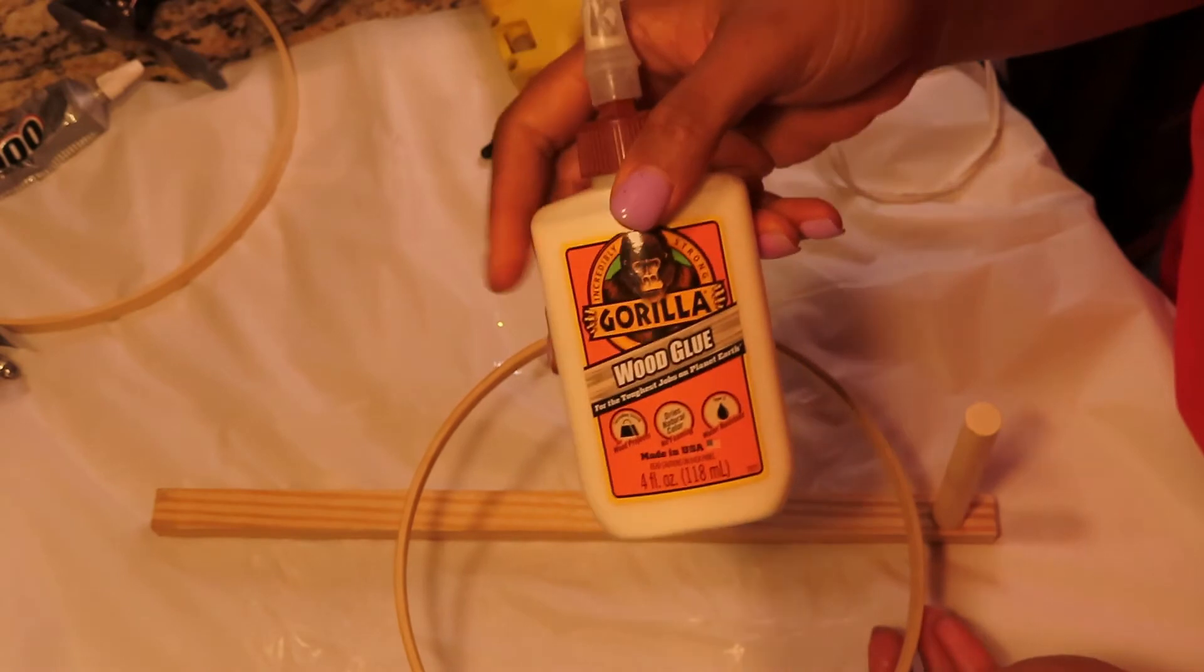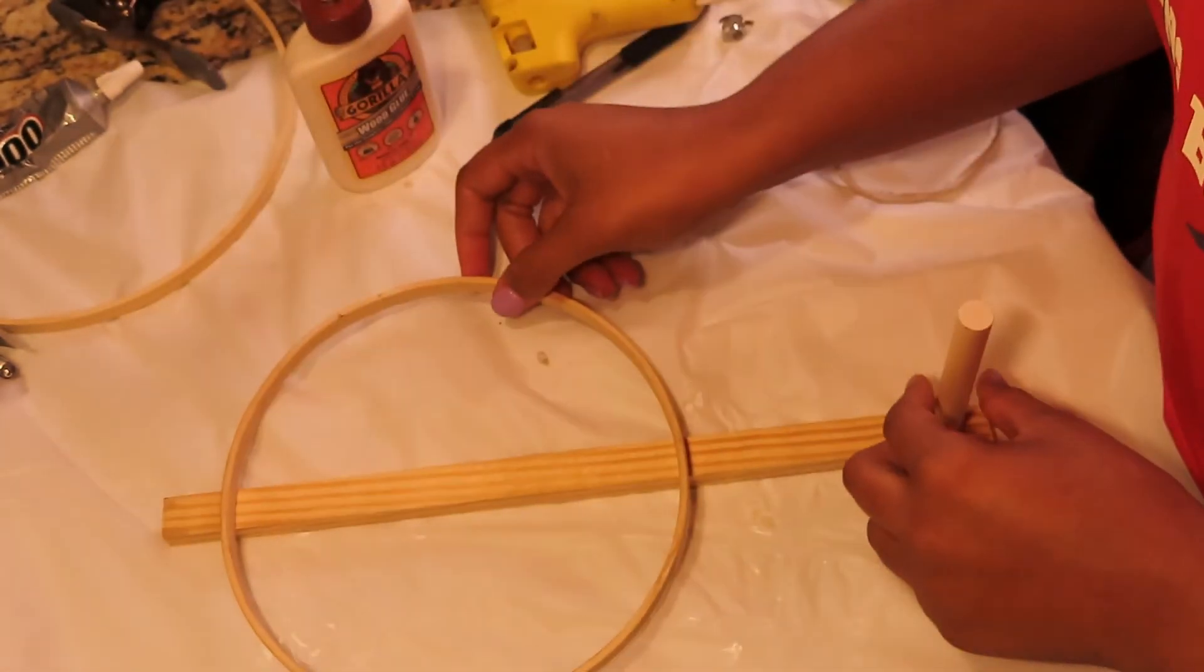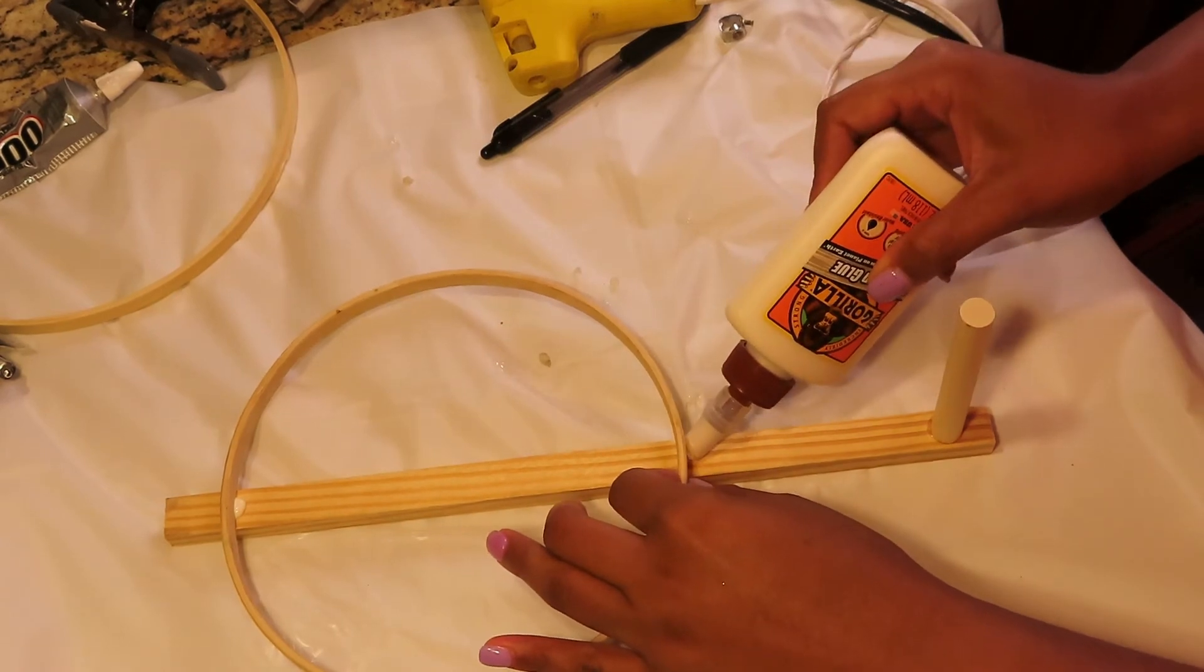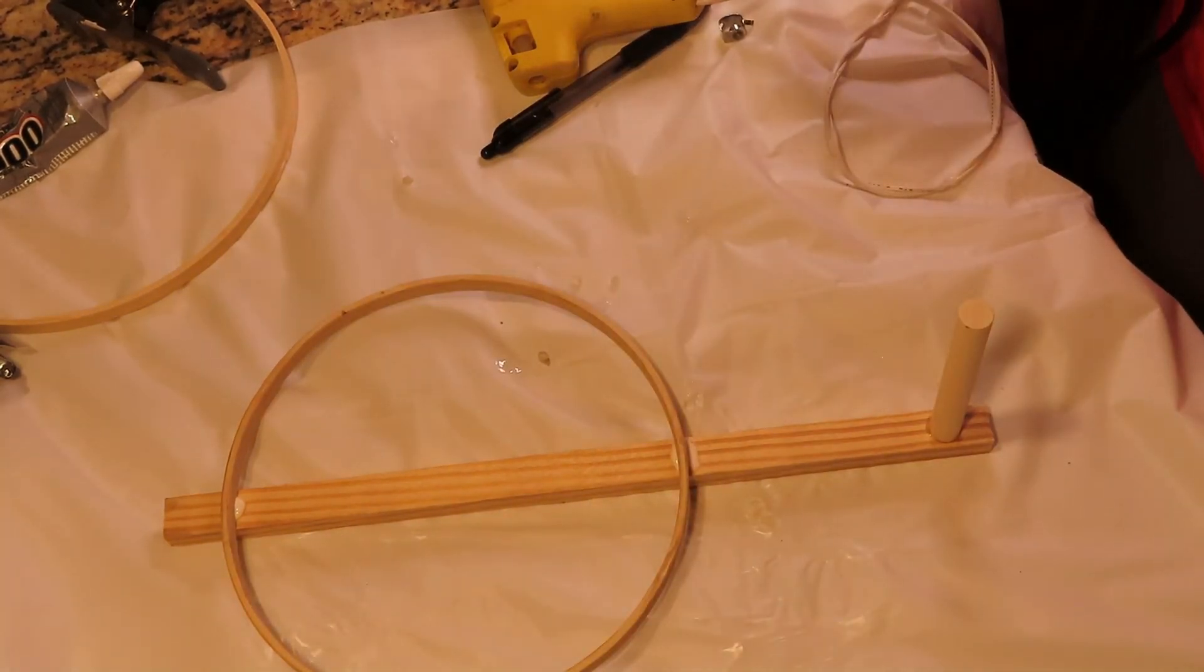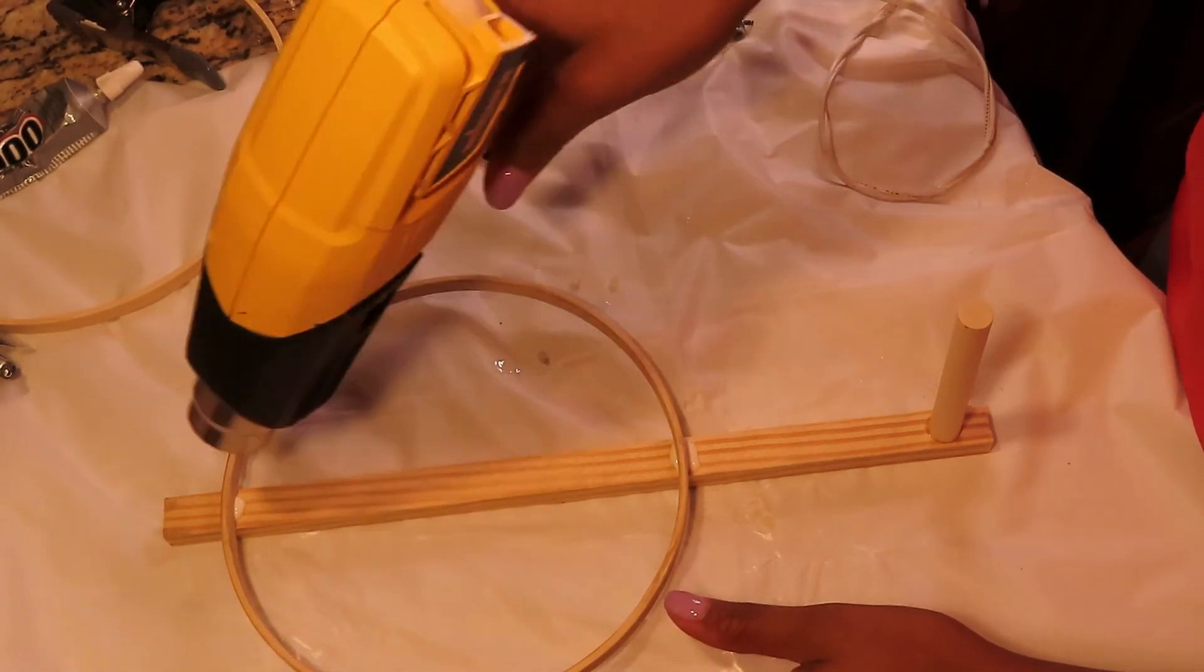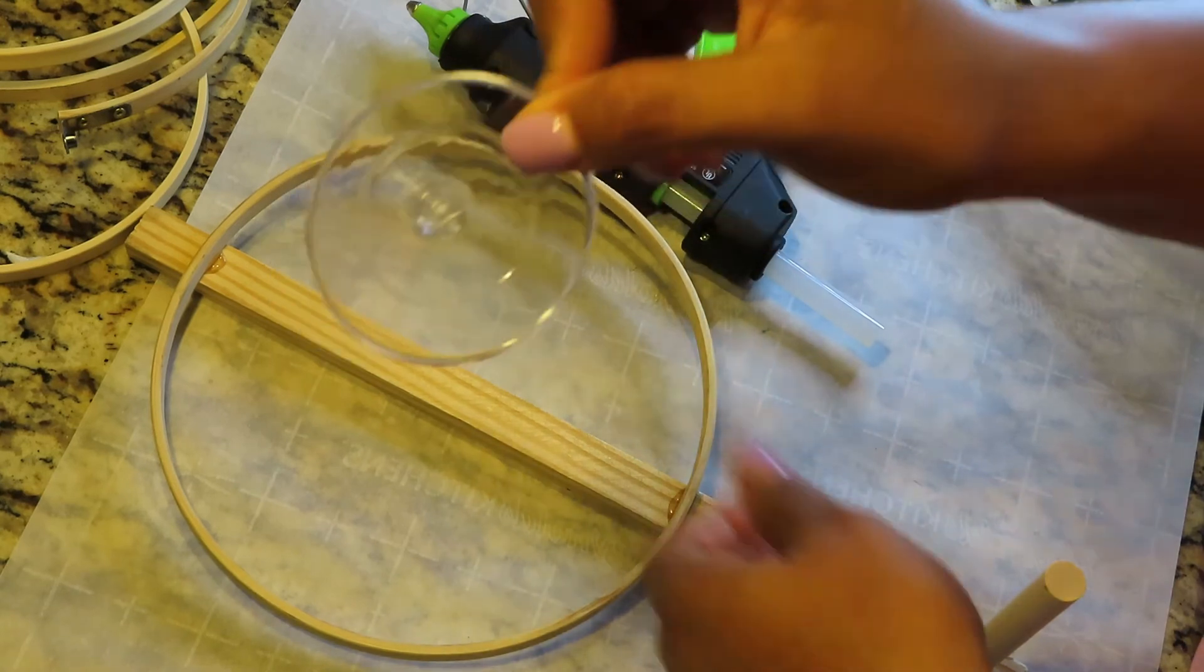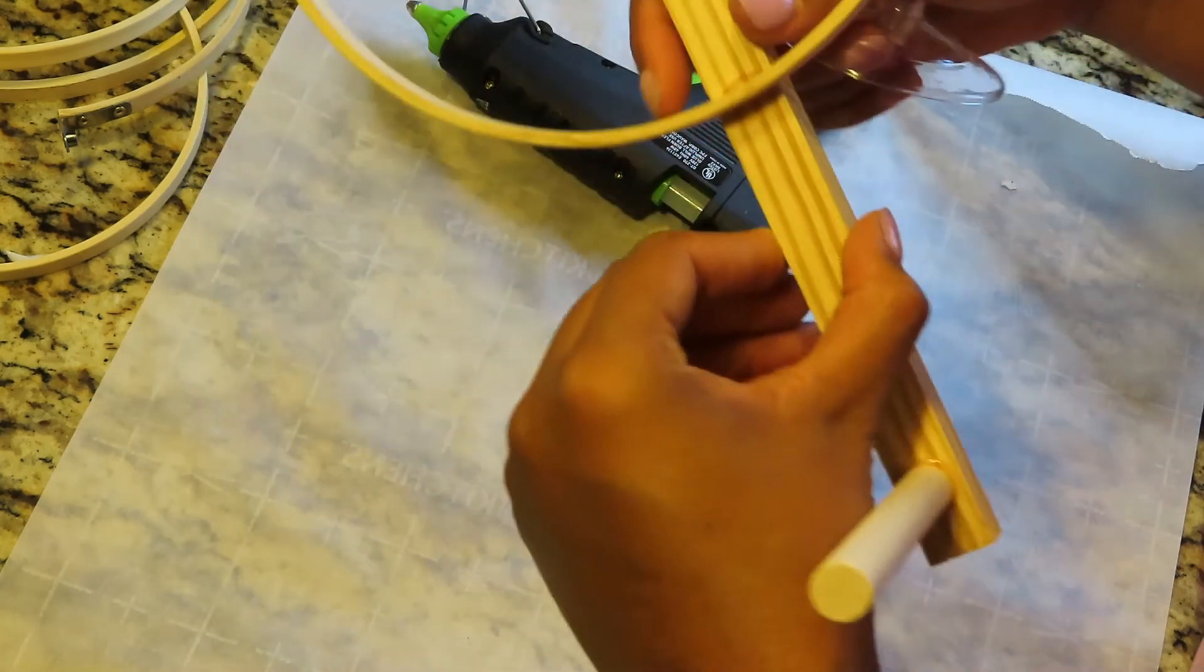Next, I'm gonna take the embroidery hoop that I had left over, the one without the clasp, and glue that to the wooden slab using the wood glue. I took my heat gun just to ensure that it dried. I left it dry for about 20 to 30 minutes, and once it dried, I took the same flute base and attached it to the bottom.